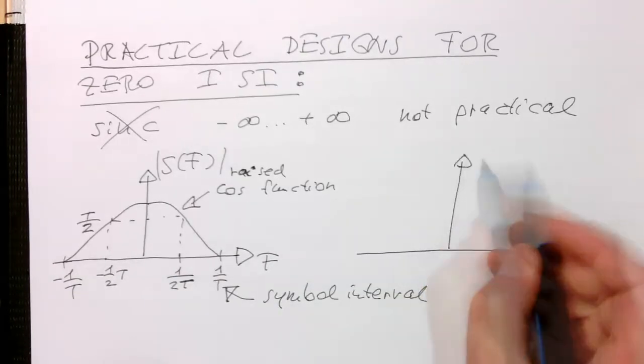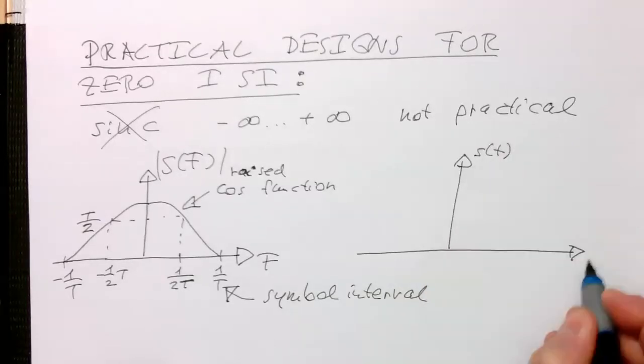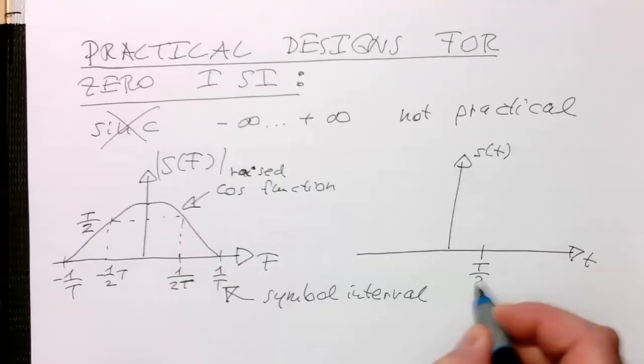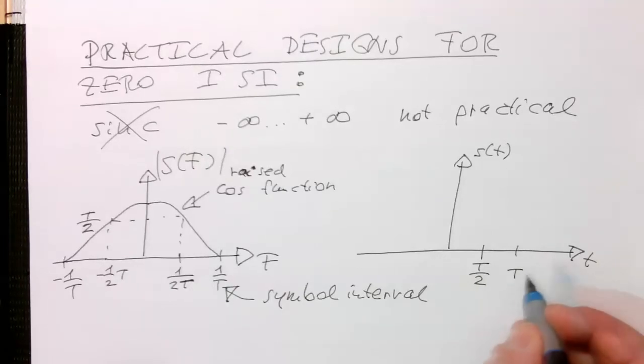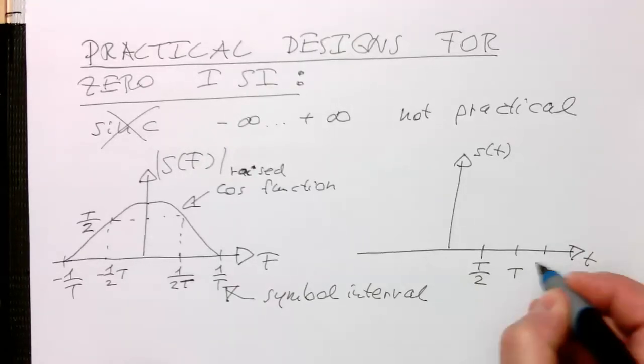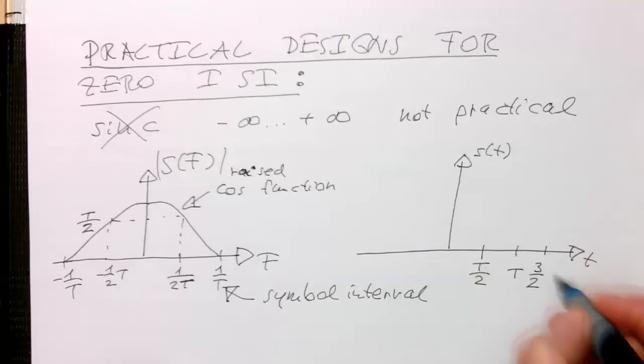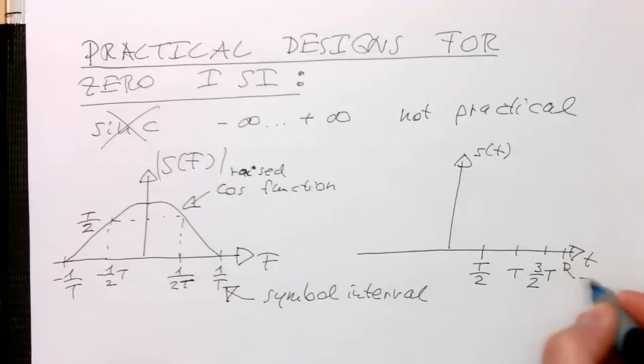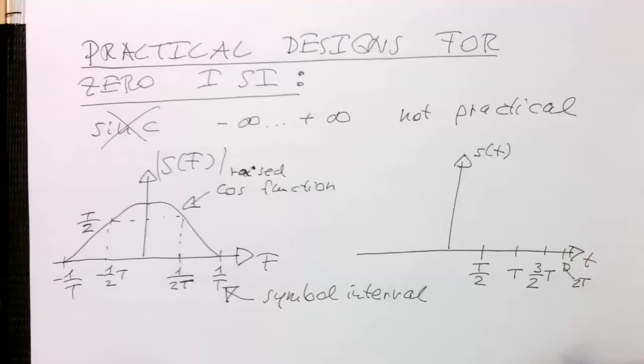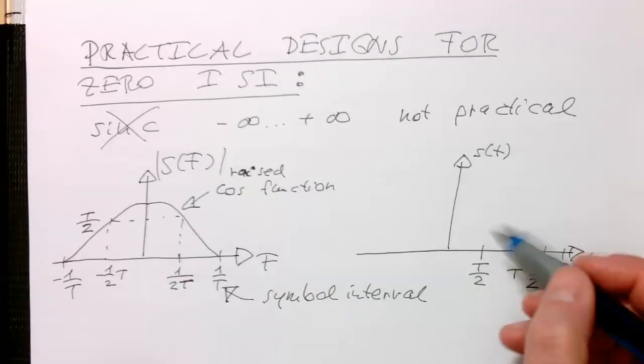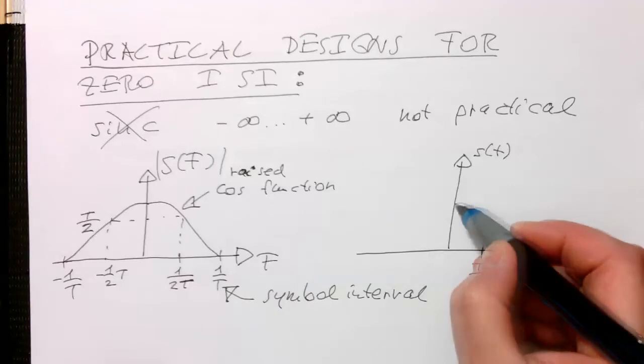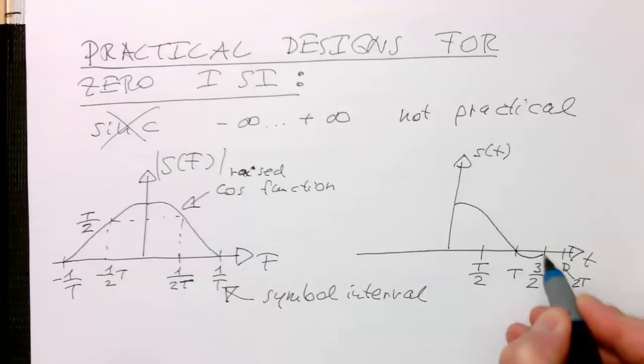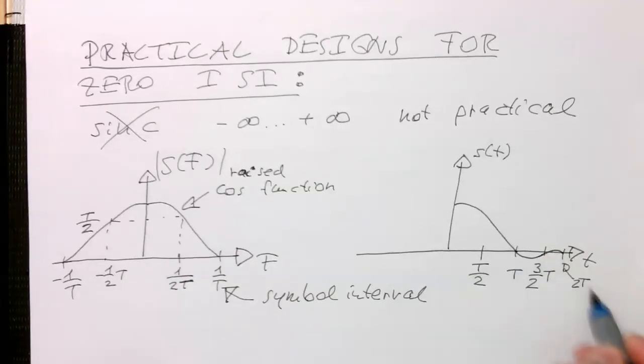So if we're looking here at S of T and T, and so if we mark here T half and we mark here T, and then we mark here 3 half of T, and then somewhere here there's 2T. Then the function works the way that it's going down and having a zero crossing at T. That's what we want. Then it has a slight hump and then it dies off at 2T.